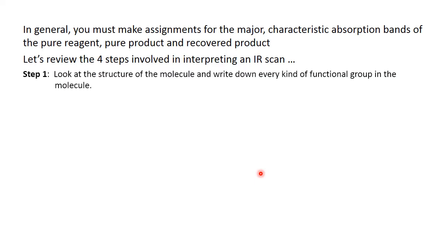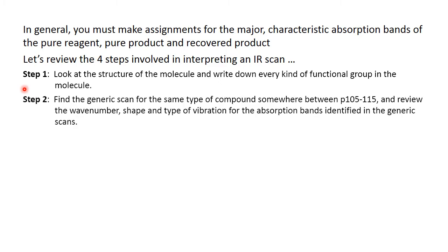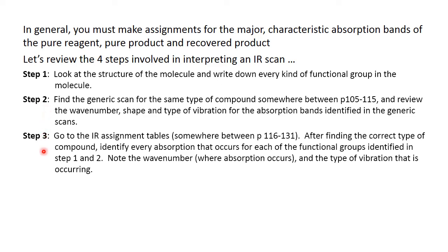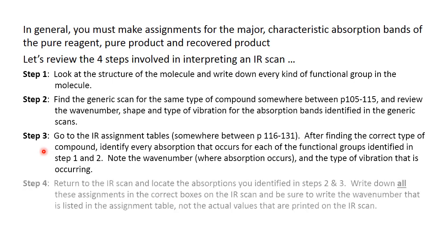We've looked at the steps several times so I'll just say briefly that we need to look at the molecule and write down each kind of functional group. Then you go to the generic scan section and look for the absorption bands that are highlighted there. Then you go to the assignments table and find the correct absorption band for each particular functional group that's present. And finally make those assignments on the IR scan.